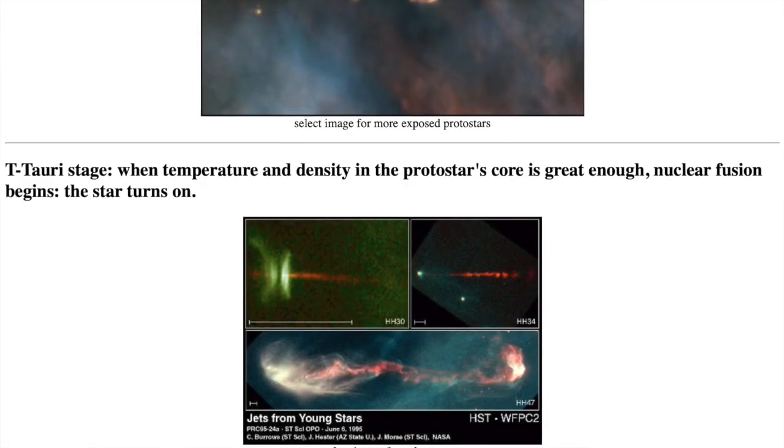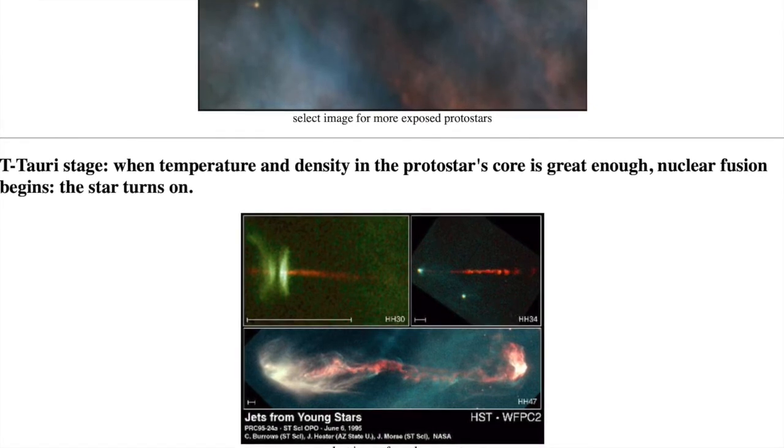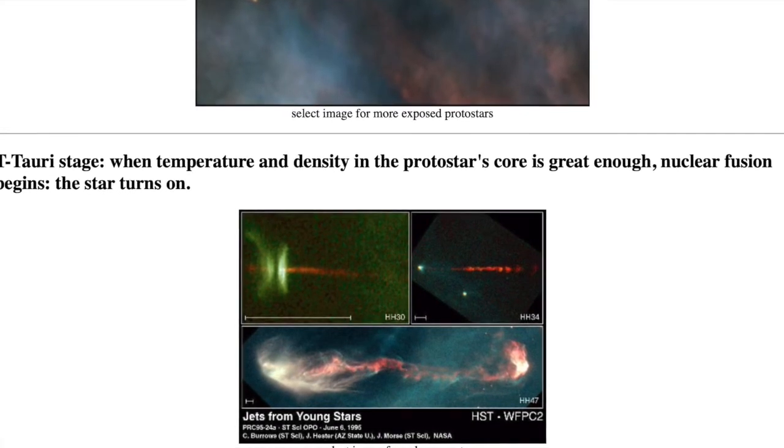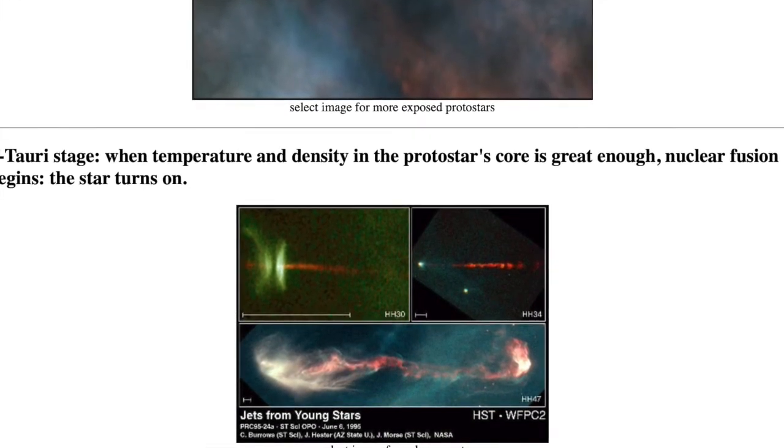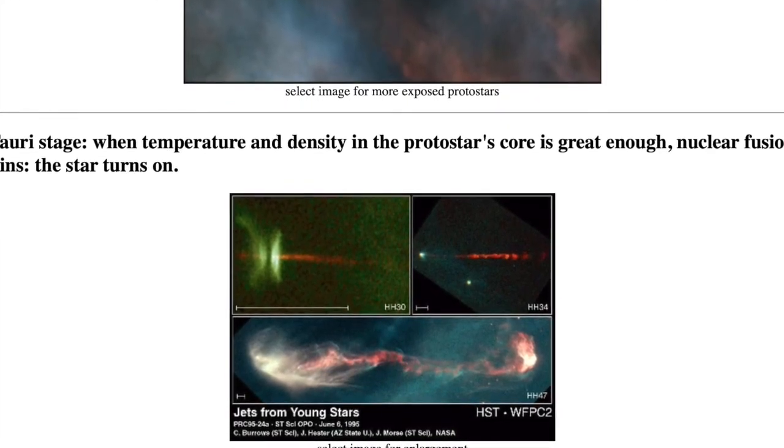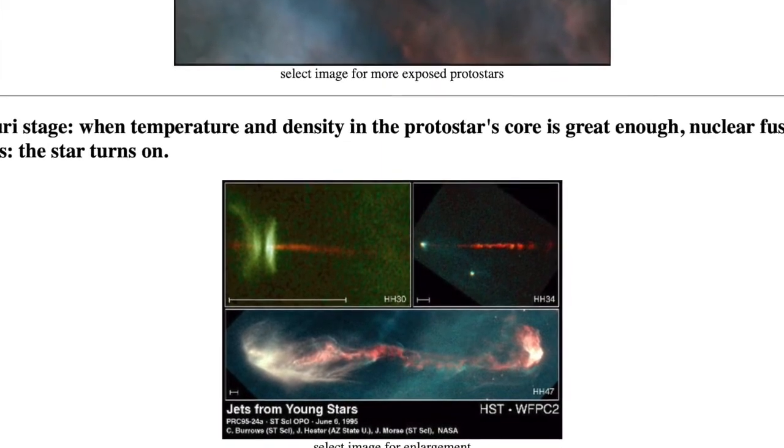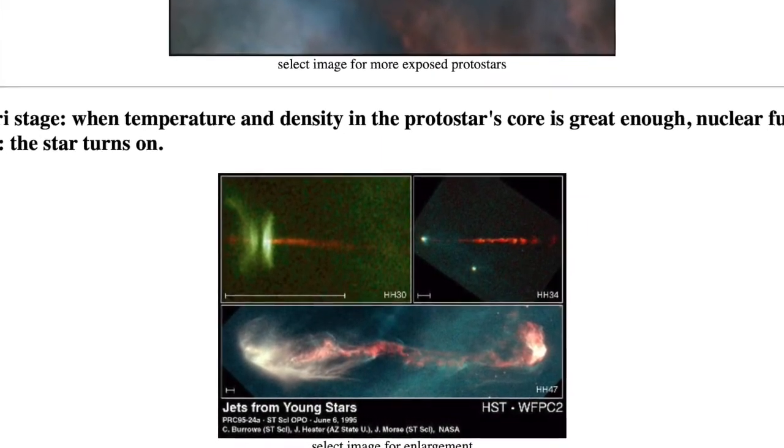The next stage is the T Tauri stage, so named after the first star we notice going through this stage, star T in the constellation Taurus. This stage is sort of like the adolescent stage between childhood and adulthood for us. The temperature and density in the protostar's core becomes great enough to start nuclear fusion.